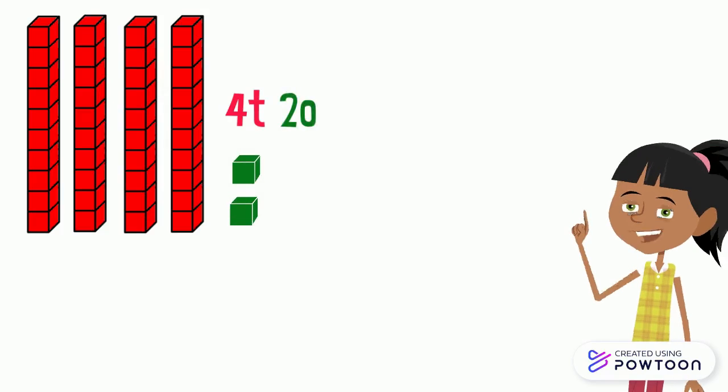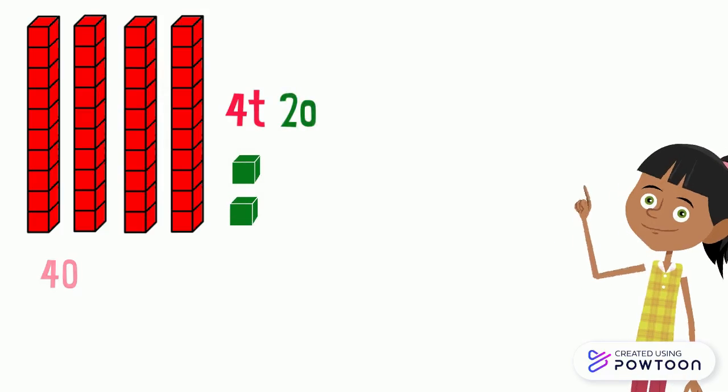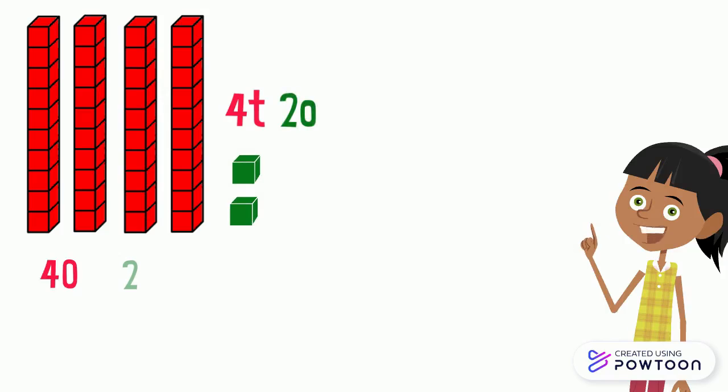There are 4 tens and 2 ones. 4 tens equals 40 and 2 ones equals 2. So 40 plus 2 equals 42. So this number is 42.